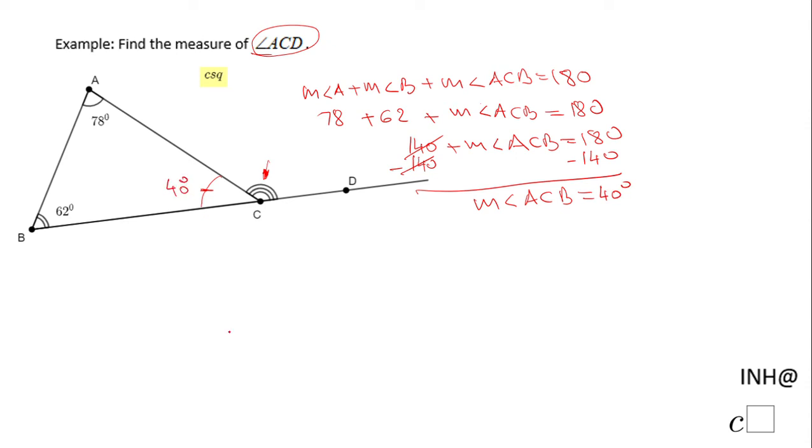So this angle here is going to be 40 degrees. Now if you take a look, angle ACB and angle ACD form a line, they are a linear pair. The measure of angle ACB plus the measure of angle ACD, the one we need to find out, equals 180 because they are a linear pair.